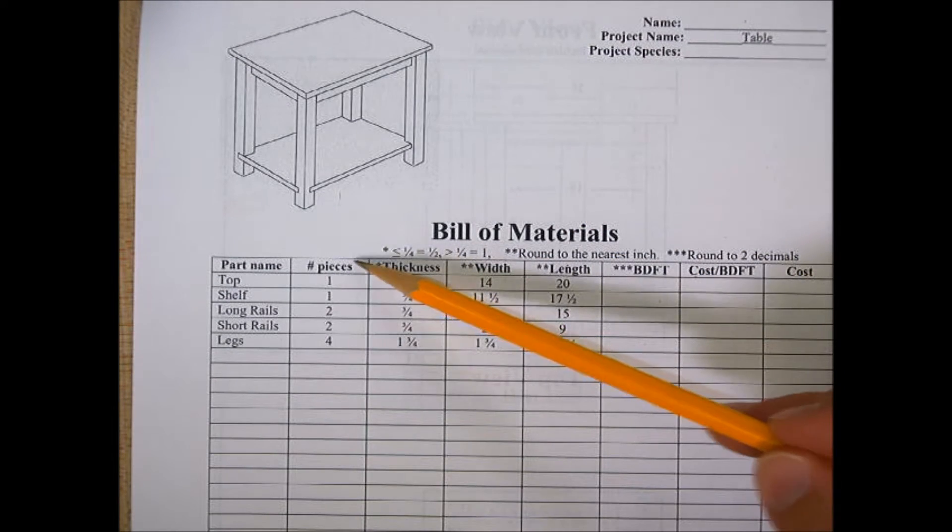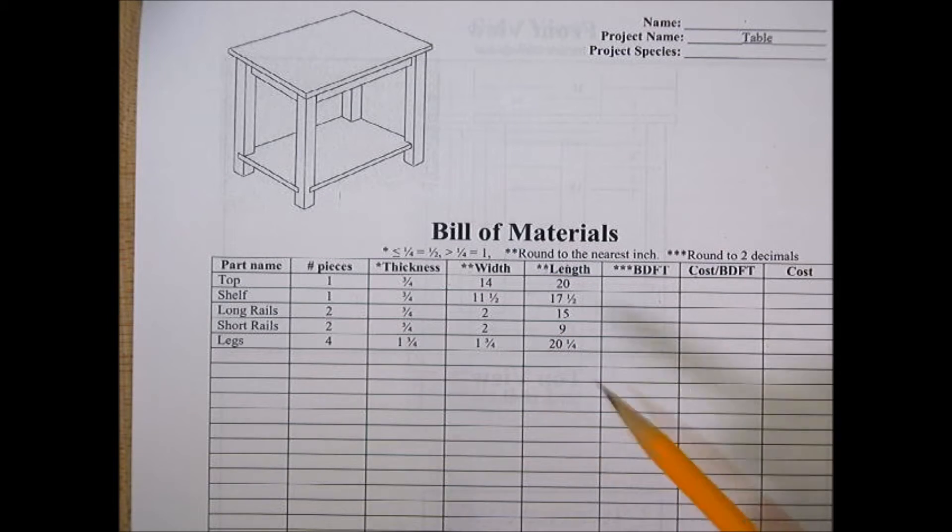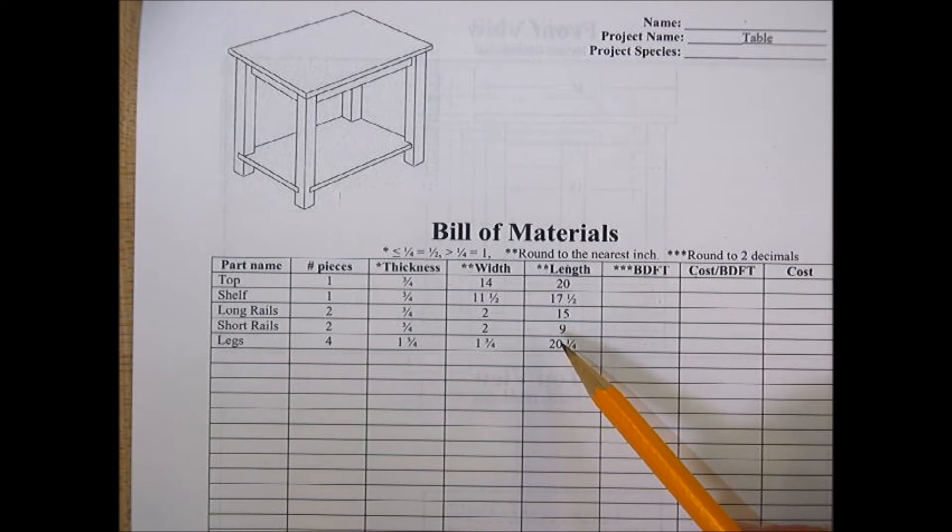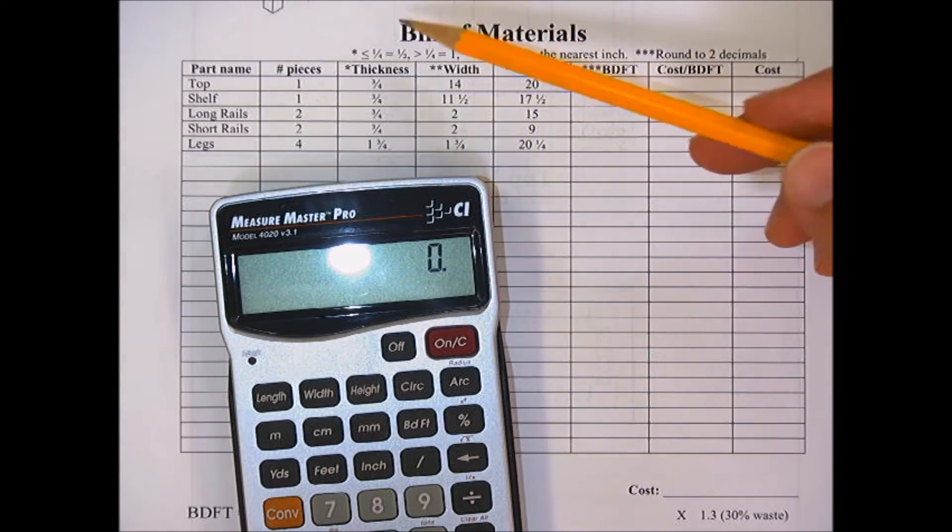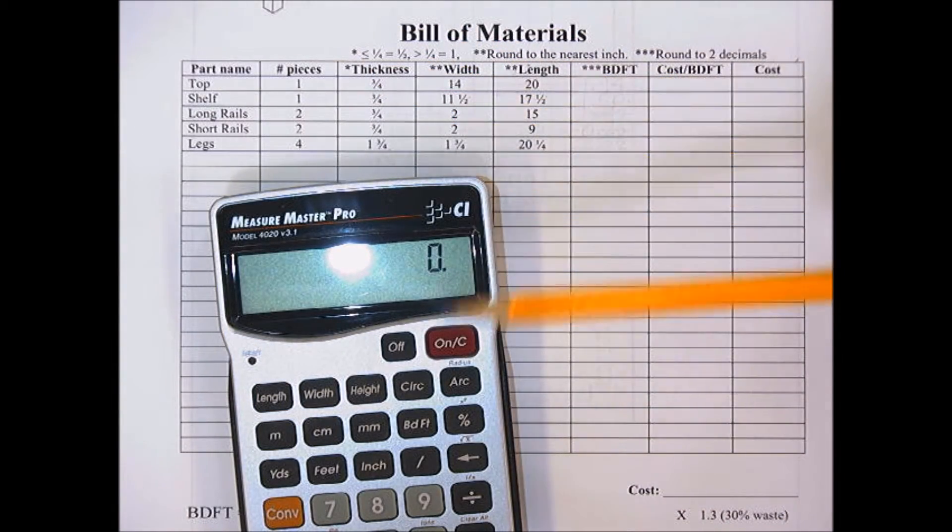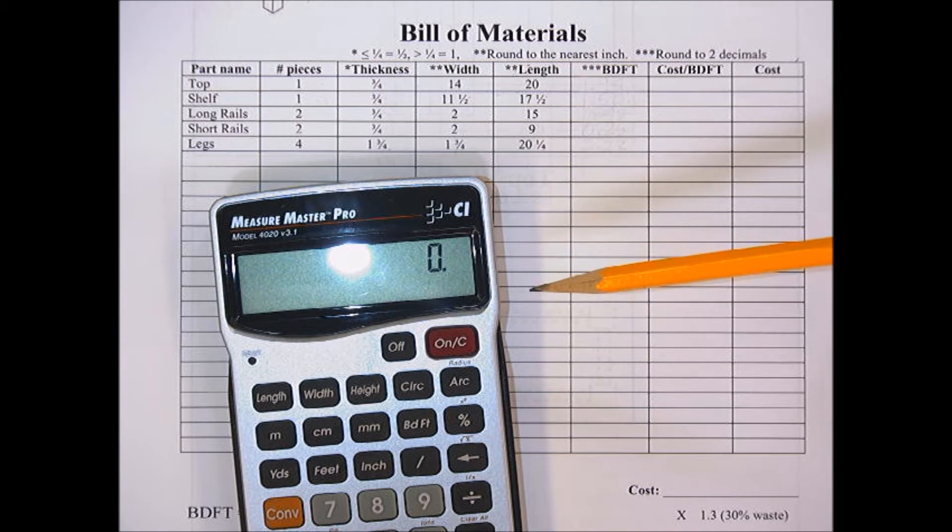We have number of pieces times thickness times width times length. Simply, we need to round these numbers to the nearest inch—remember, we always round to keep the math simple. Then we multiply across these four columns and divide by 144. It's as simple as one, two, three. Now, whenever we have a one in the table, we're not going to key that into the calculator because any number times one is itself.